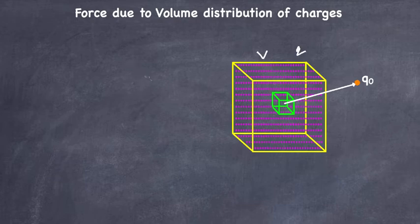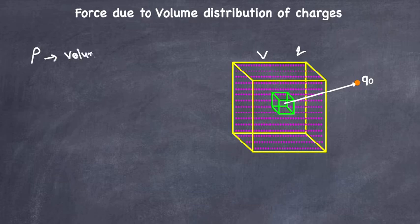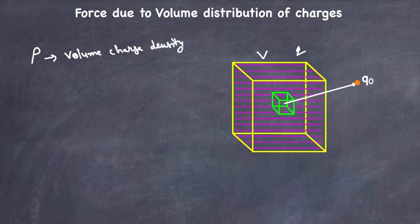And it is uniformly distributed. As we know, ρ is called volume charge density.